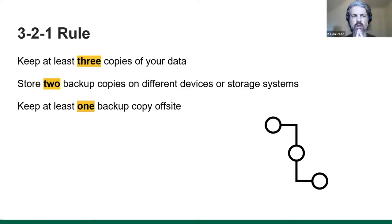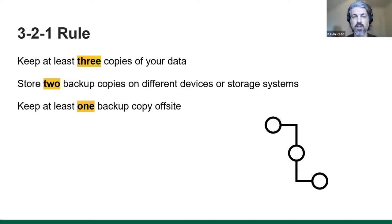A really good idea is to follow the 3-2-1 rule: keep at least three copies of your data, store two backup copies on different devices or storage systems, and keep at least one backup copy off-site. When I was at NYU, Hurricane Sandy hit and a lot of researchers — even though they had a laptop and a USB drive or hard drive in their lab — lost years of data because it wasn't backed up off-site and they weren't using the university storage system, which automatically backs up data. I always keep three copies of my data.